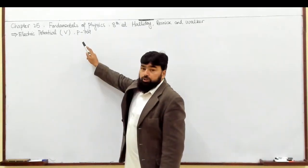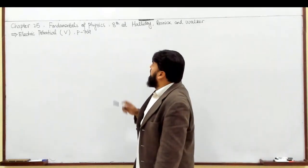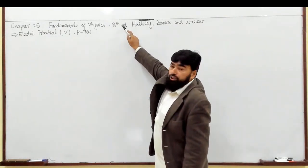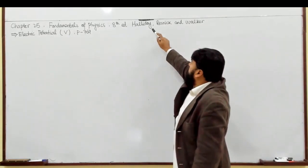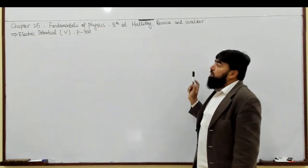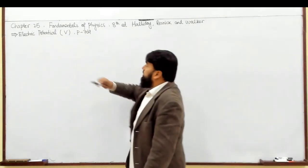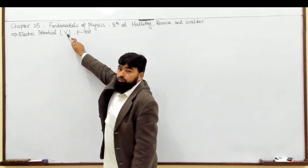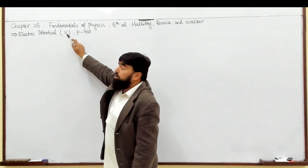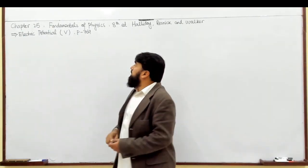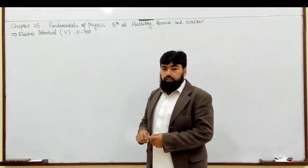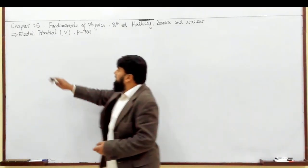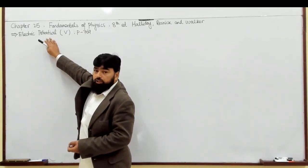We will start with Chapter 25, Fundamentals of Physics, 8th edition by Halliday, Resnick and Walker. We will discuss electric potential, which is denoted by V, on page 769 of the book.